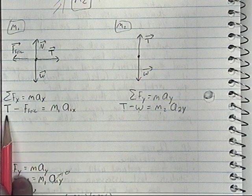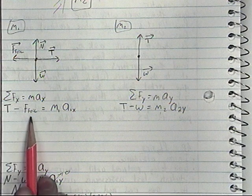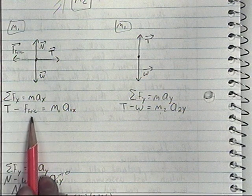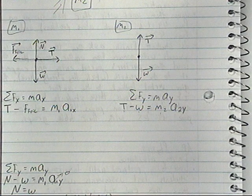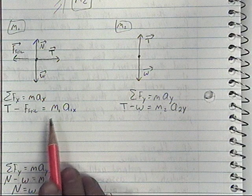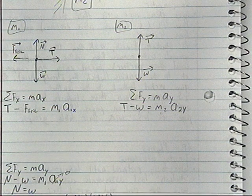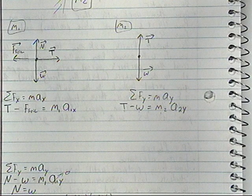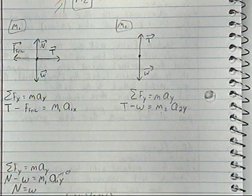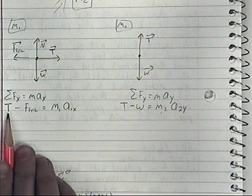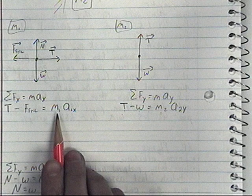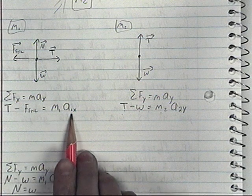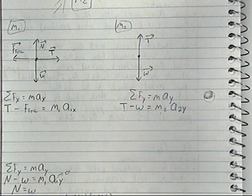For mass one's x-direction equation, tension is unknown, the frictional force can be calculated as the coefficient of friction times the normal force, and acceleration is unknown. So across both equations there are three unknowns: tension — which appears in both equations — acceleration for object one, and acceleration for object two.